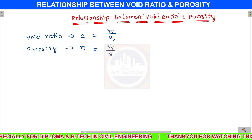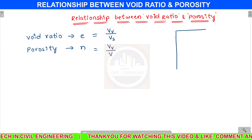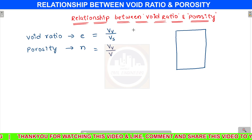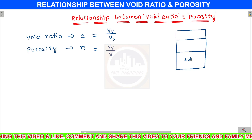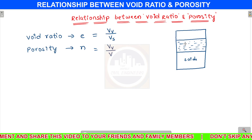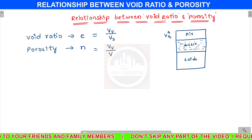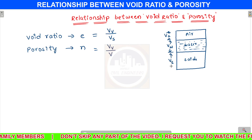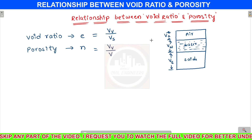Now we are going to build a relationship between e and n. I will draw a diagram so that you can understand. This is a three-phase diagram. In this three-phase diagram, the bottom portion consists of solids, then there is water, and then air. Here it is volume of air, volume of water, and volume of soil particles — the solids.